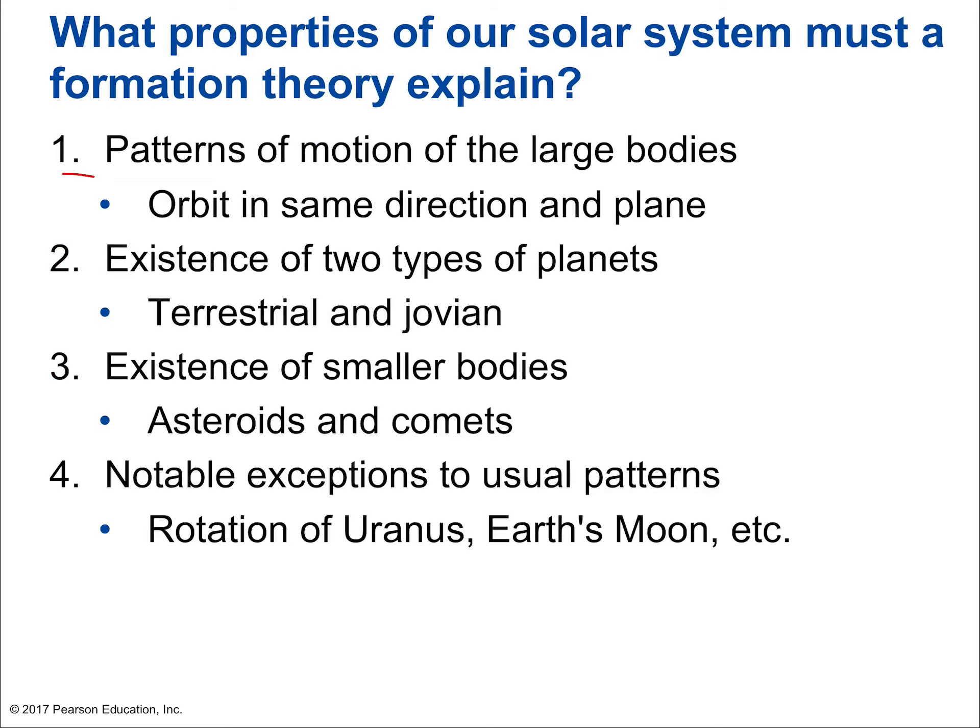What are the four major characteristics of the solar system that any reasonable theory must explain? Number one: patterns of motion of the large bodies. We have to explain why all the orbits are in the same direction and basically in a plane. Why don't we have planets orbiting in a more spherical structure? Why do they all orbit on the same plane, and even orbit in the same direction?